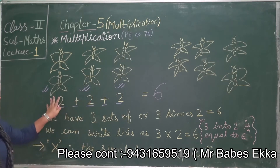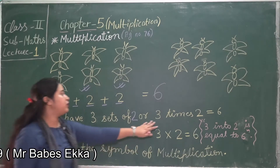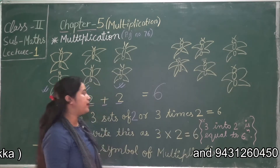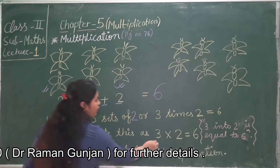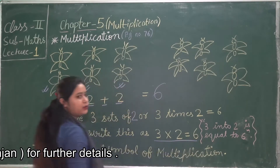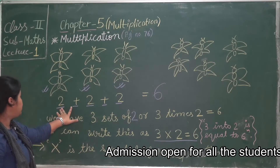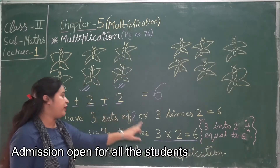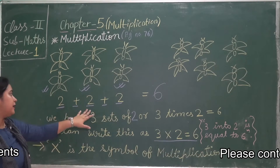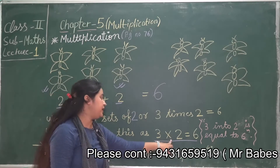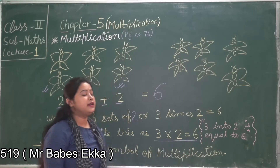We have three sets of two butterflies in each set. We can also say three times two is equal to six. So we can write this as three into two is equal to six. The number two is repeated three times, so we write three into two is equal to six — the total is six.